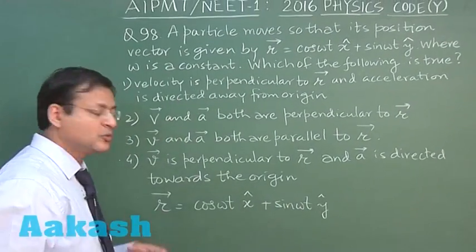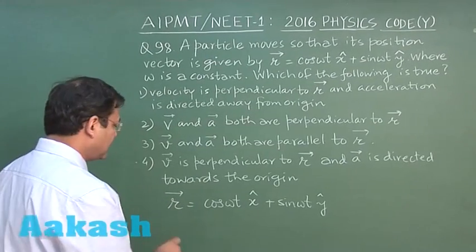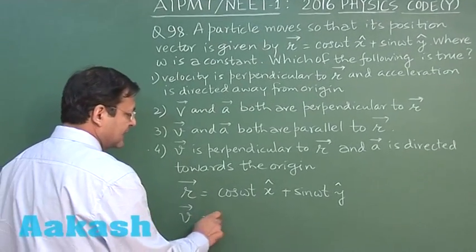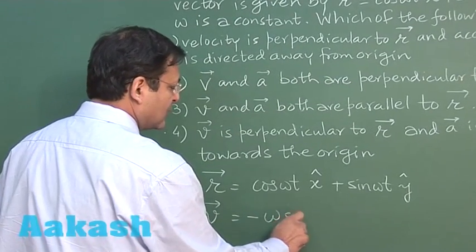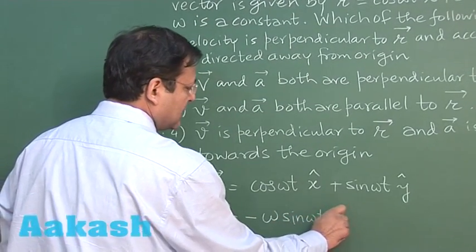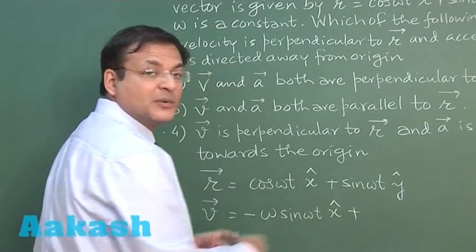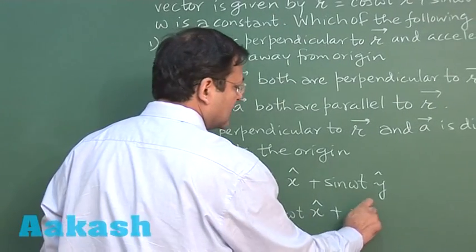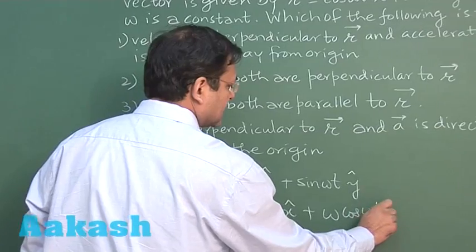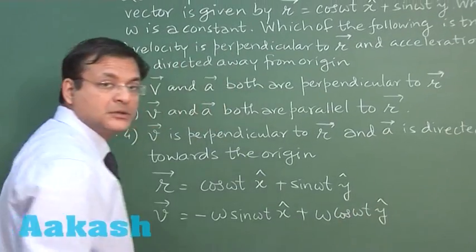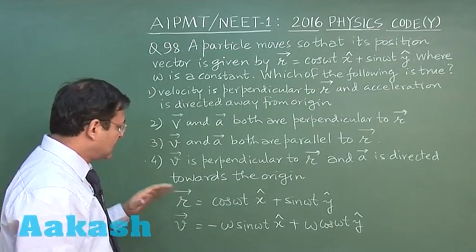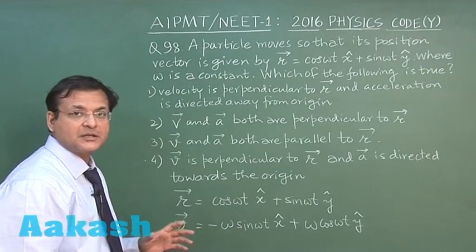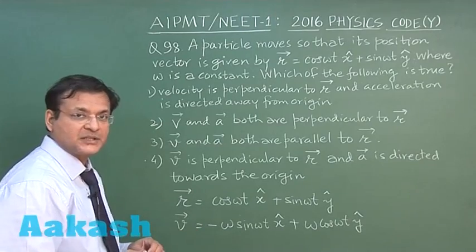Now what you can do? You simply differentiate to get the velocity. If you do that, you will be getting cos omega t is minus omega sin omega t x cap plus sin omega t differentiated, it will be omega cos omega t y cap. So now if you see the dot product of these two, you will be getting zero. That means the position and velocity, they are perpendicular to each other.